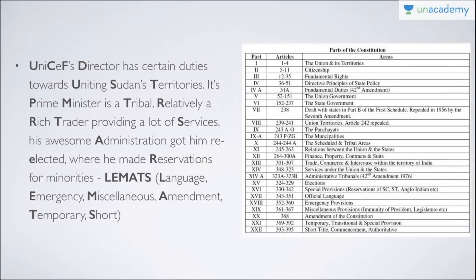Part 1 has Articles 1 to 4 — that is the Union and its Territories. Part 2 is Citizenship, from Articles 5 to 11. Part 3 is Articles 12 to 35 — Fundamental Rights. Part 4 is Articles 36 to 51 — Directive Principles of State Policy. Part 4A is Article 51A — Fundamental Duties, added by the 42nd Amendment Act of 1976.